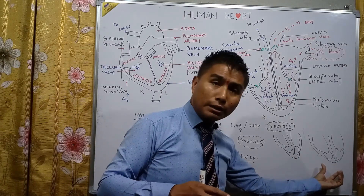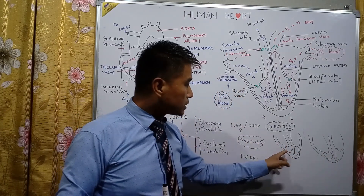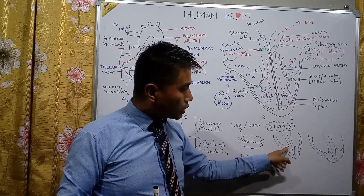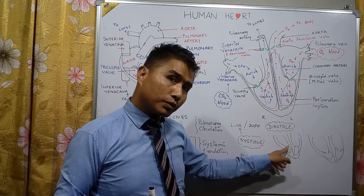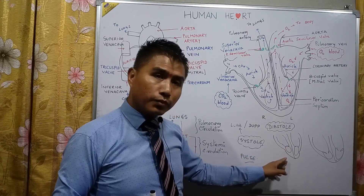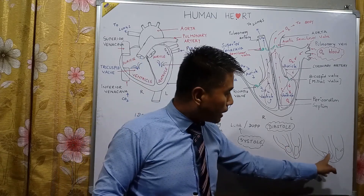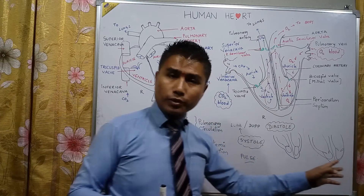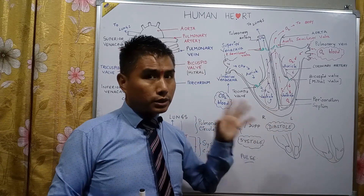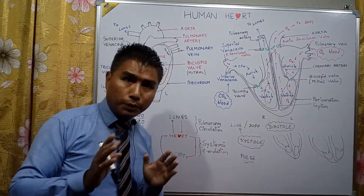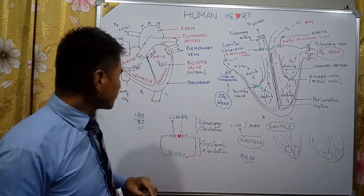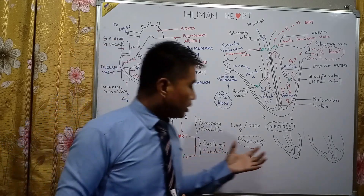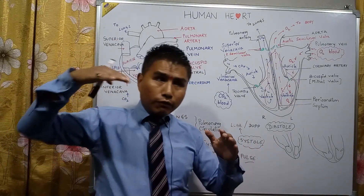In diagrams, if the valves are closed that indicates systole, and if the valves are open that indicates diastole — you need to be very particular about identifying the diastole and systole positions of the heart.